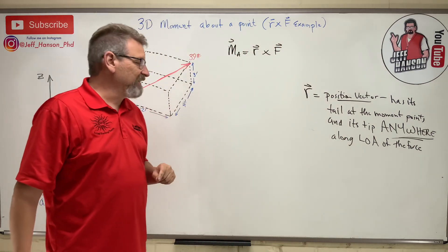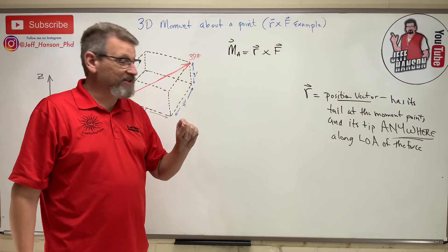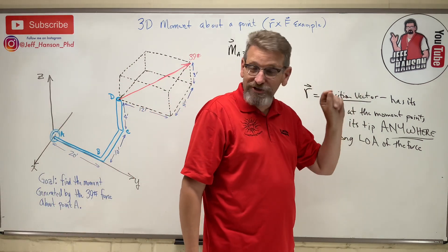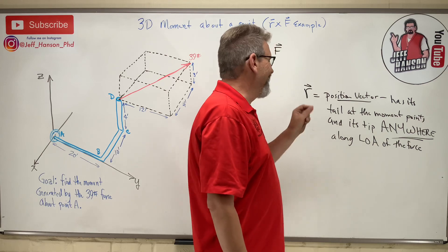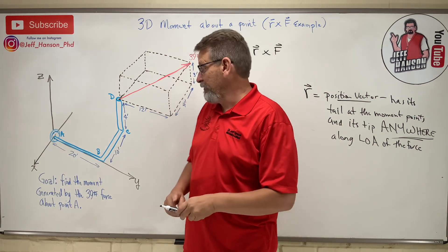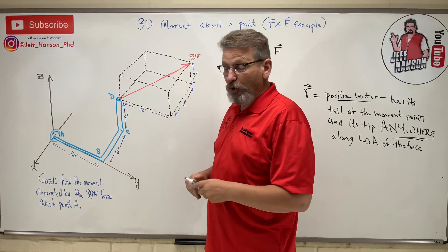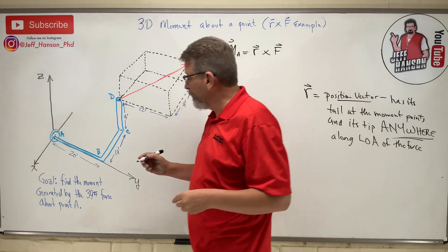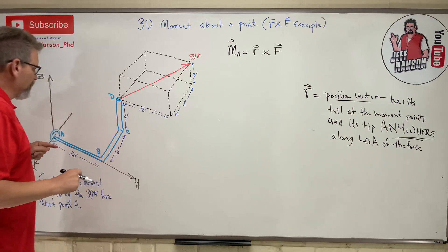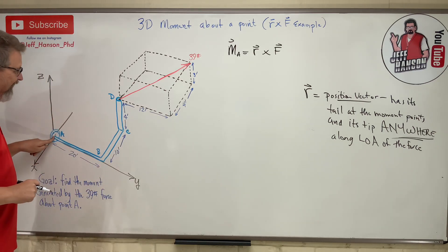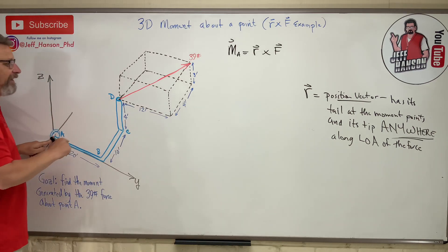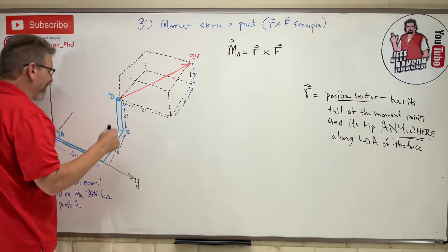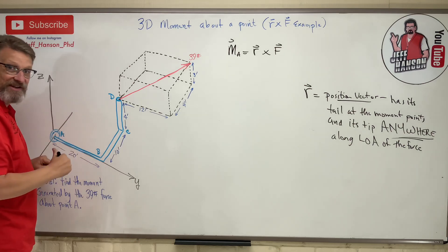Tail at the point at which we wish to take the moment, and its tip anywhere along the line of action of the force. If we look at this, here's the force going from point D off into the yonder. The vector should start at the moment point, that's at A, to anywhere on the line. We can make it from there to here, or anywhere we want, but I think it makes most sense to make it to point D.